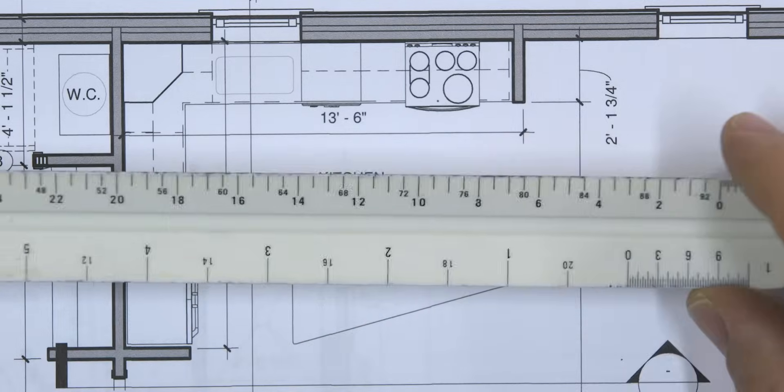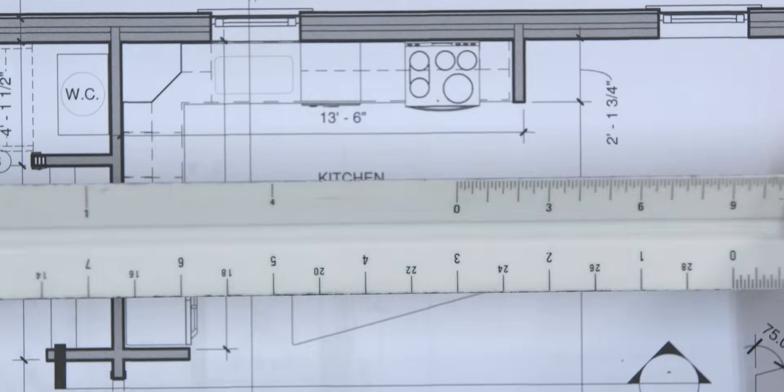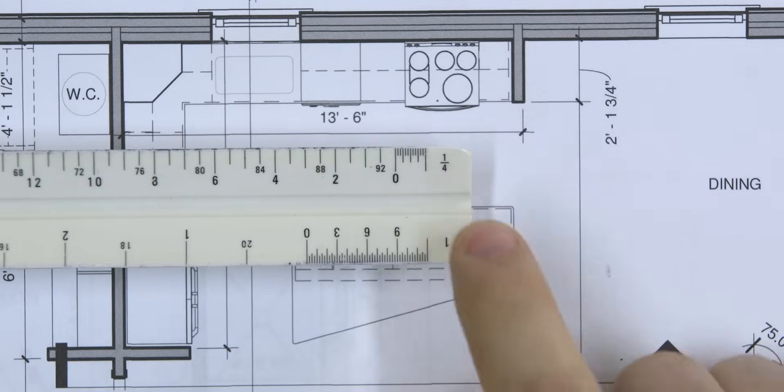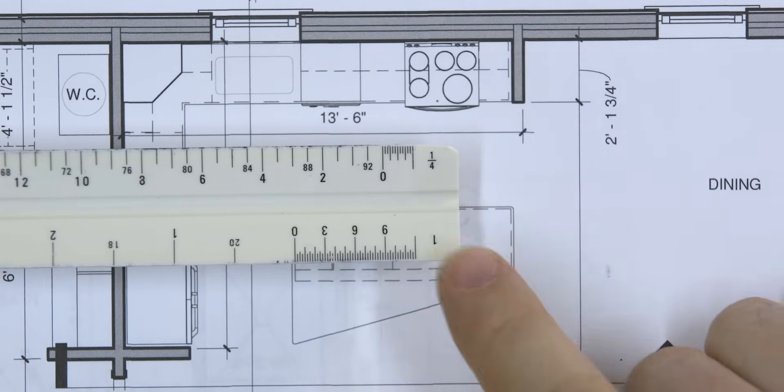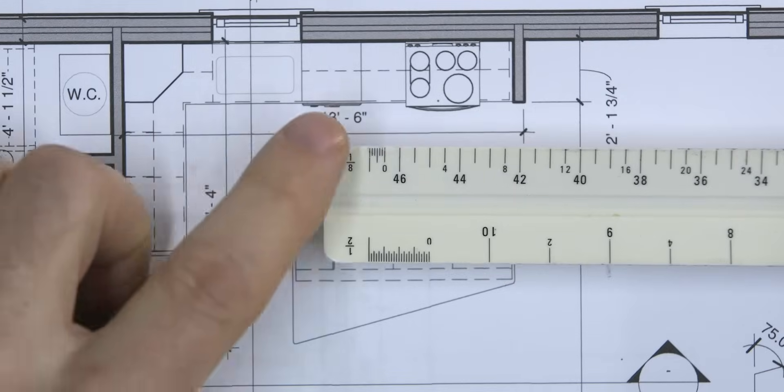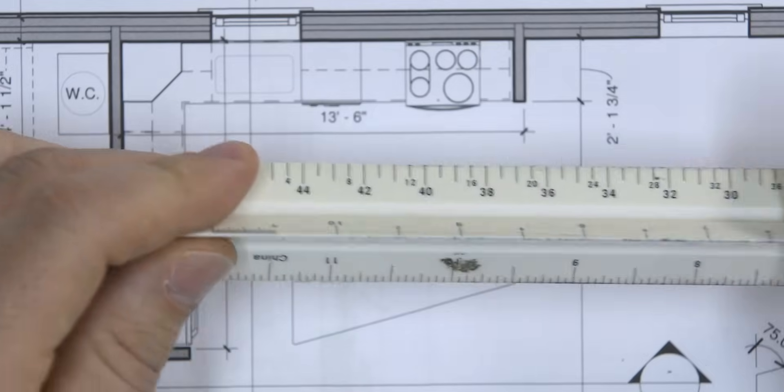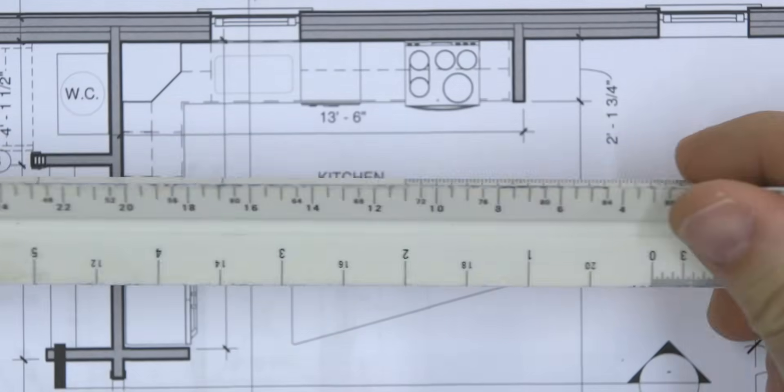If you look at the ruler that we have here, you can see there's a lot of numbers. Where I want you to start first is to look all the way down to the end of the scale, and you can see there's two numbers: quarter and one. On this side, there's an eighth and a half. These are the scales on this ruler. There's actually 12 of them on this ruler. So how do you know which one to use?